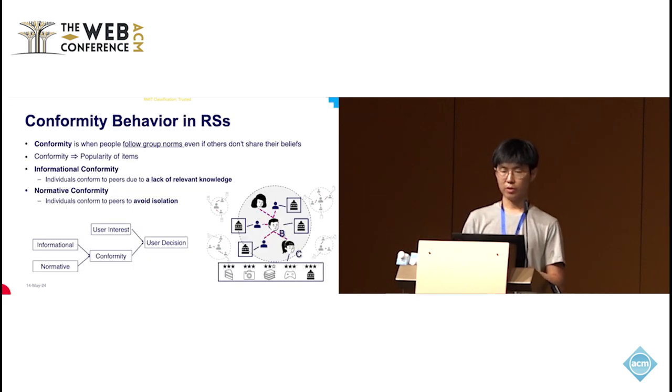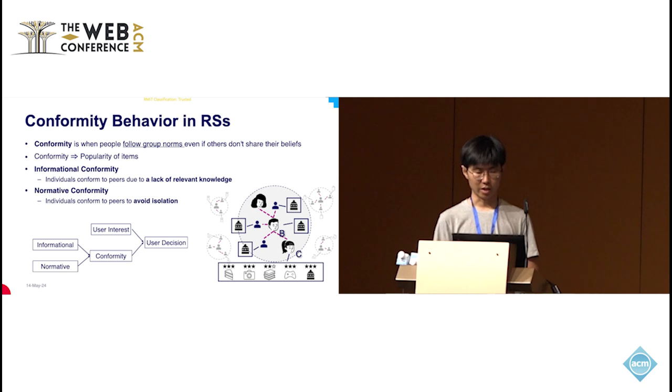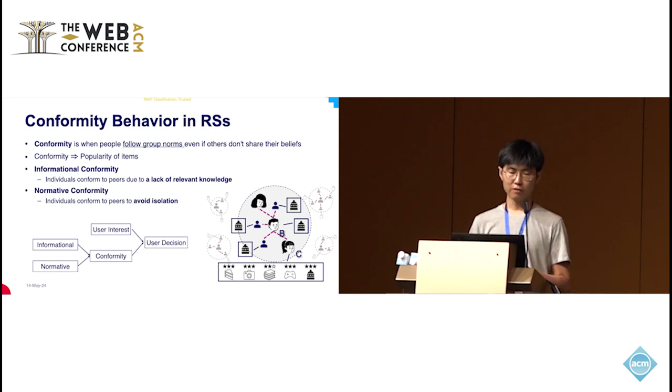In existing research, we first learned the concept of conformity behavior in recommendations. Conformity behavior is when people follow group norms, even if they don't share the same belief or interest, just like panic buying. Conformity in recommender systems usually leads to item popularity. There are two forms of conformity.